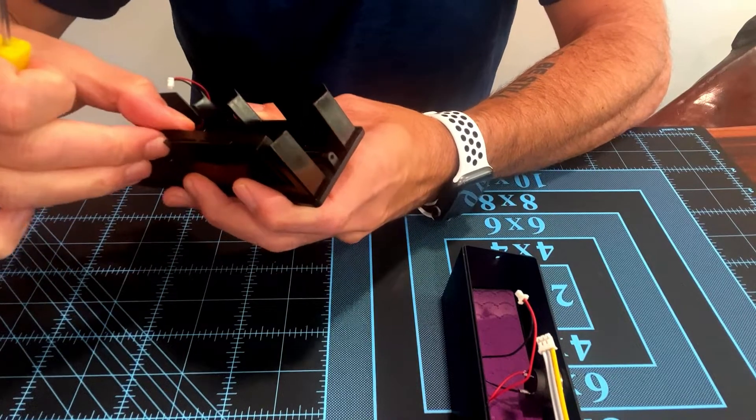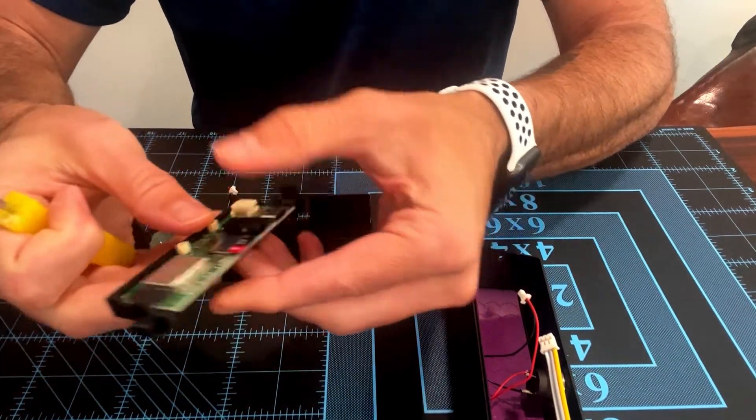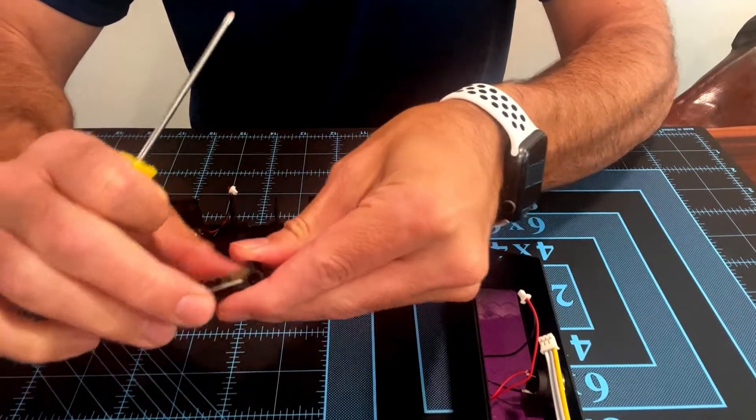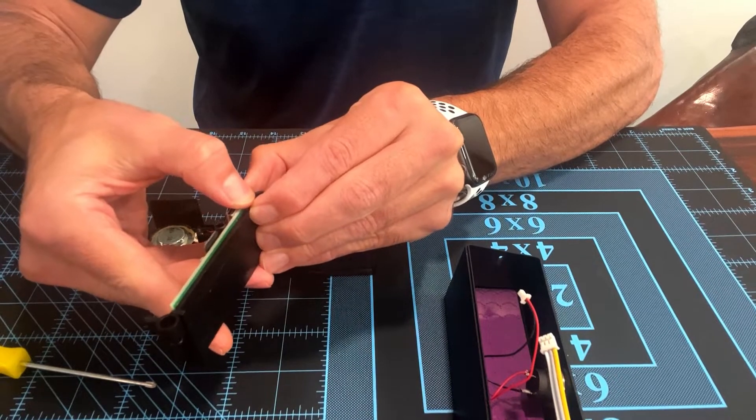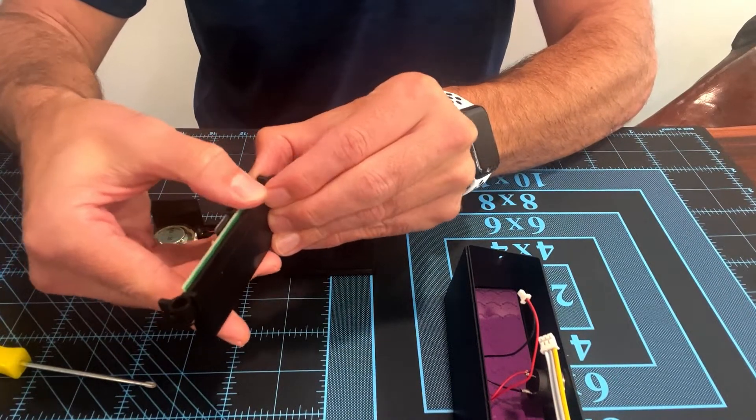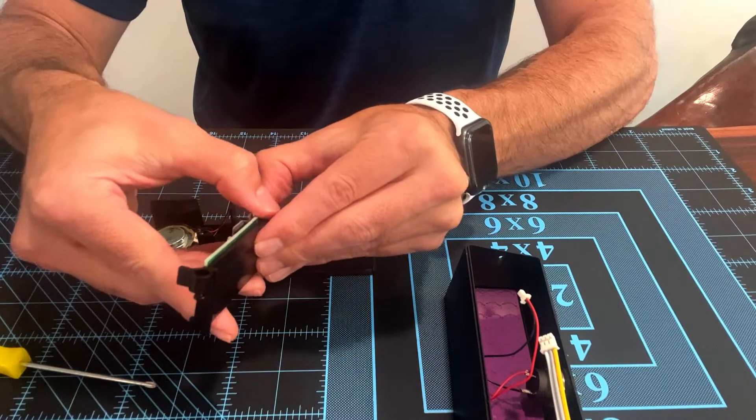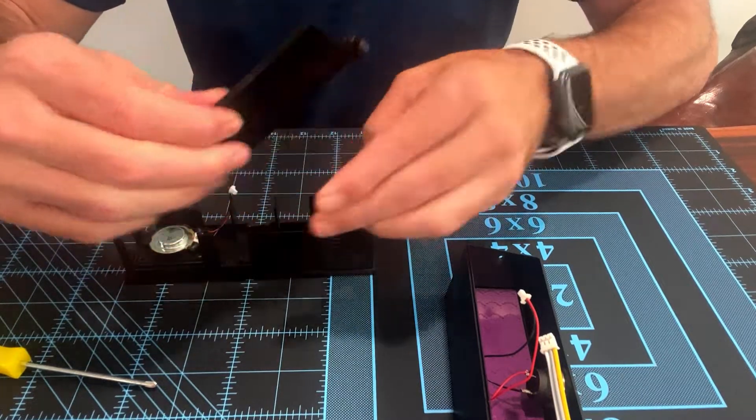Now the circuit board is attached with some double-sided tape behind it, so you can gently start to pull this until you can get the tape to release. Don't pull too hard, just work on it until it gets fully released, and then you can put the new circuit board in.